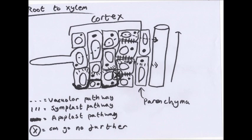In the apoplast pathway, the cellulose cell walls have many water-filled spaces between cellulose molecules, and water moves through these spaces between cells without passing through any plasma membranes. This means dissolved mineral ions and salts can be carried within the water. At the endodermis, there is a structure called the Casparian strip, which prevents water passing through the cell wall at that point, so the apoplast pathway stops there, and all water must enter the symplast or vacuolar pathway.